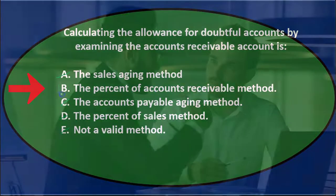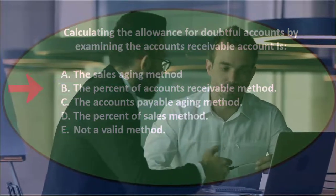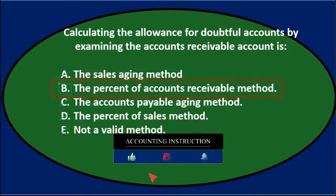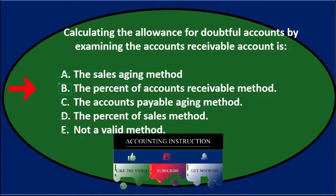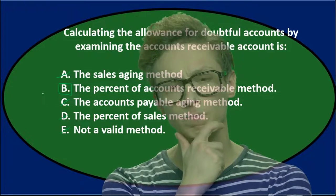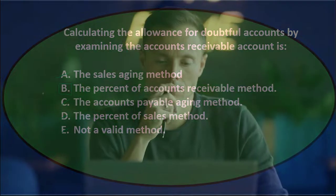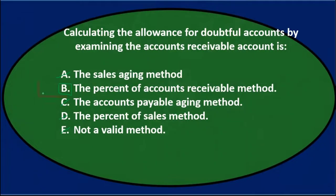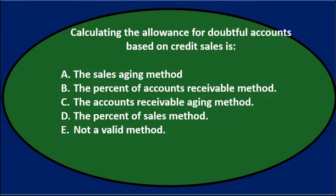Note that you can get more detail in terms of the receivables method — we could take a percentage of the total receivable balance, which is less accurate, or use an aging method that breaks receivables out by age and applies percentages there. In essence, we're either focusing on the balance sheet accounts receivable to figure out the allowance amount, or on the income statement sales. Next question.